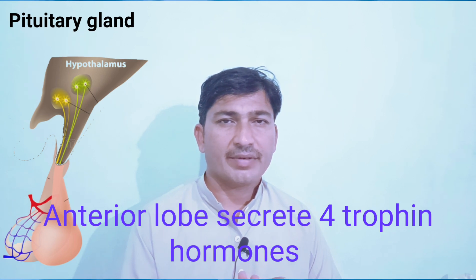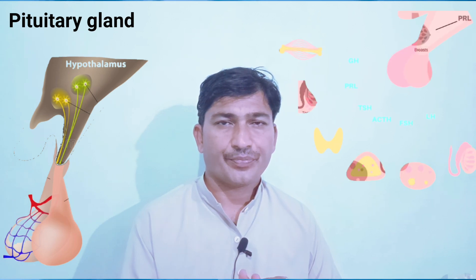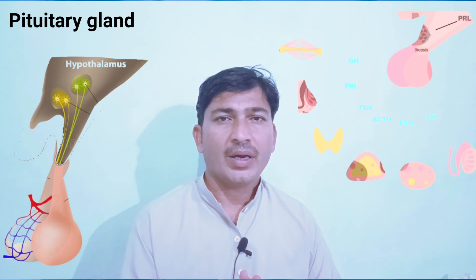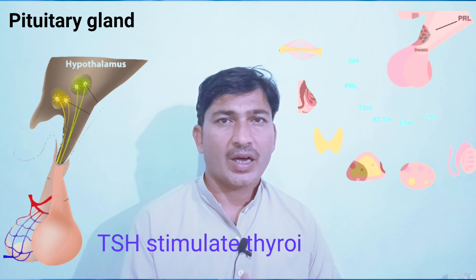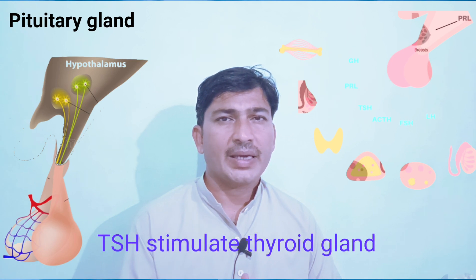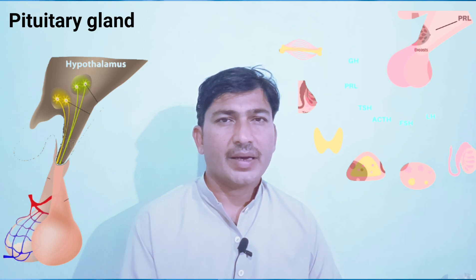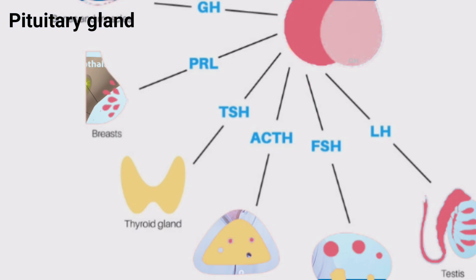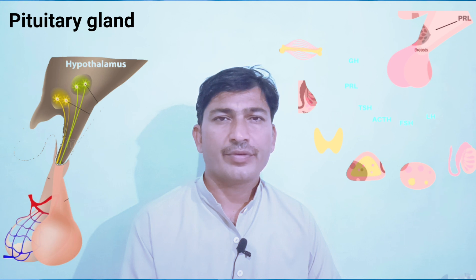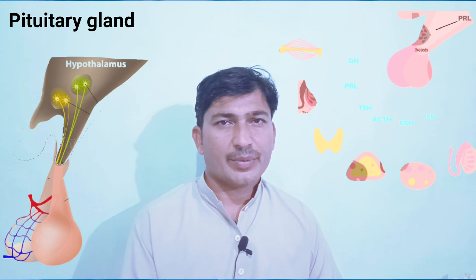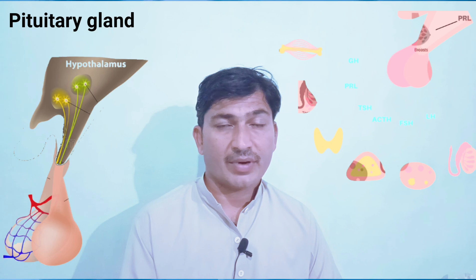The anterior lobe of the pituitary gland secretes trophic hormones — these are hormones that activate other glands. Number one is thyroid stimulating hormone, or TSH. TSH activates the thyroid gland, and when the thyroid gland is activated, it releases hormones that keep the metabolic rate inside the body balanced. That is why this hormone is very important.